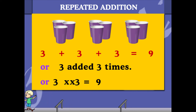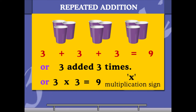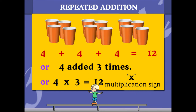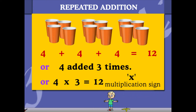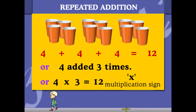Another example is three groups of four cups. This is four plus four plus four, equal to twelve, or four added three times. This is also four into three, equal to twelve.